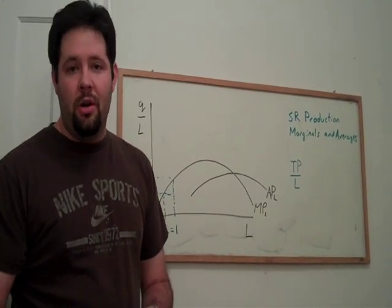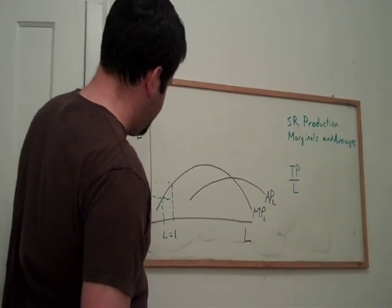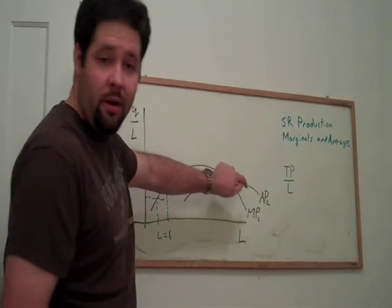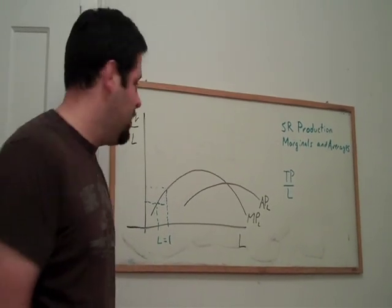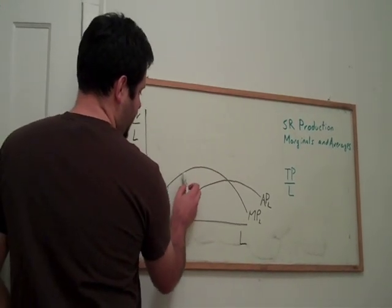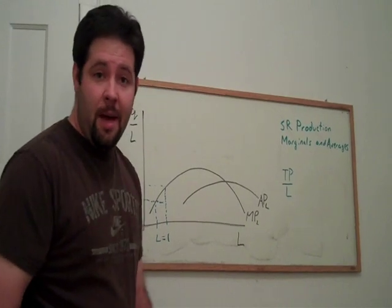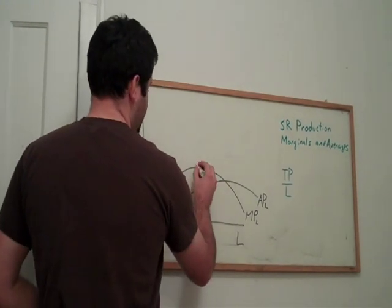This is what is called increasing marginal returns. This segment of the marginal product curve, this sloping upward, exhibits increasing marginal returns. So we go along, we're increasing our marginal returns just happily, but one thing happens.